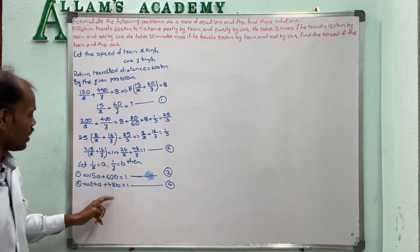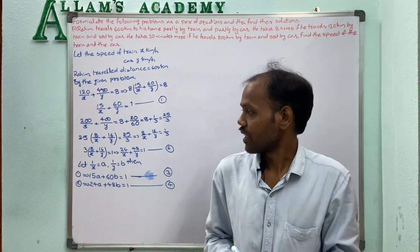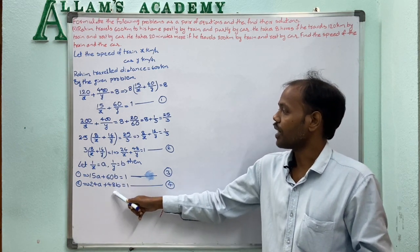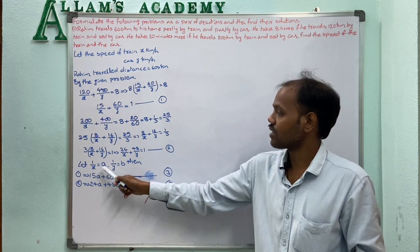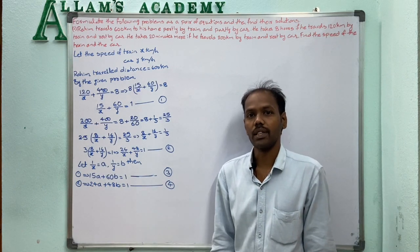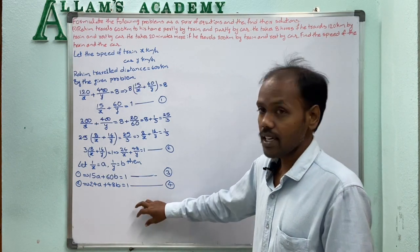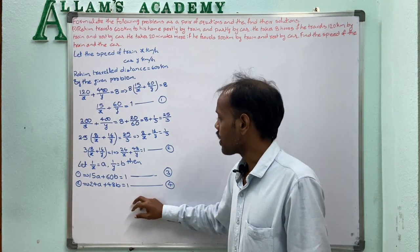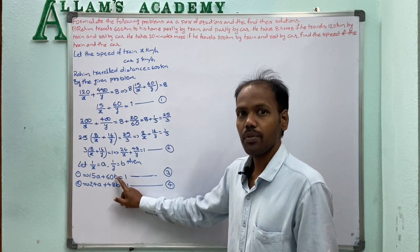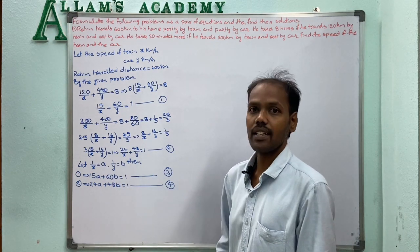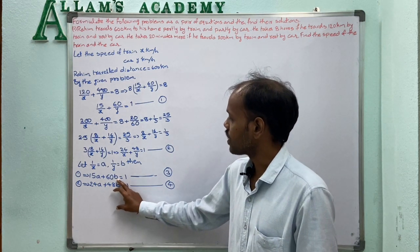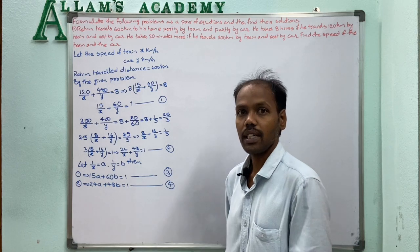We solve these two equations using the elimination method. To equalize the B coefficients, the LCM of 60 and 48 is 120. So equation 3 is multiplied by 4 and equation 4 is multiplied by 5.